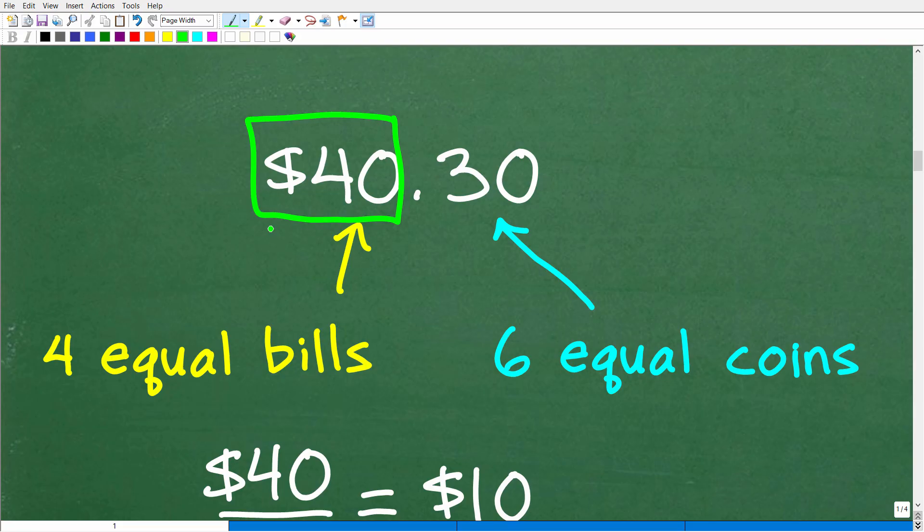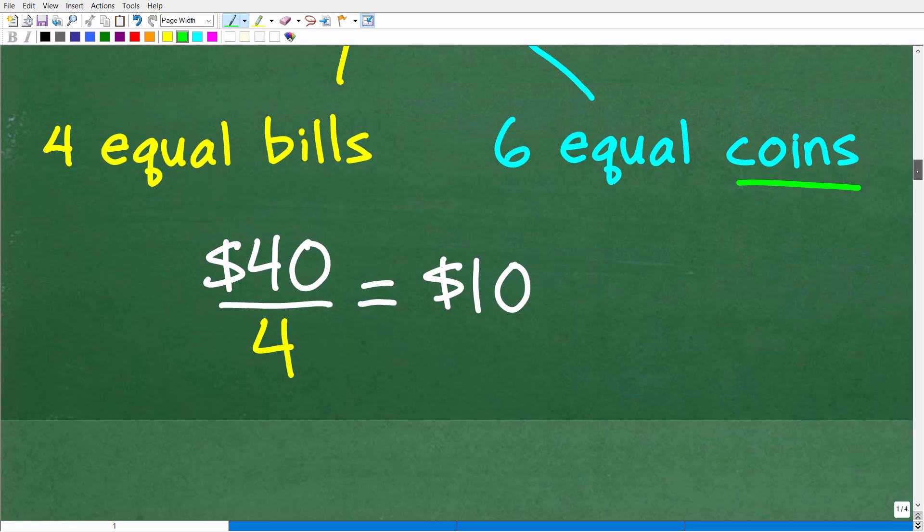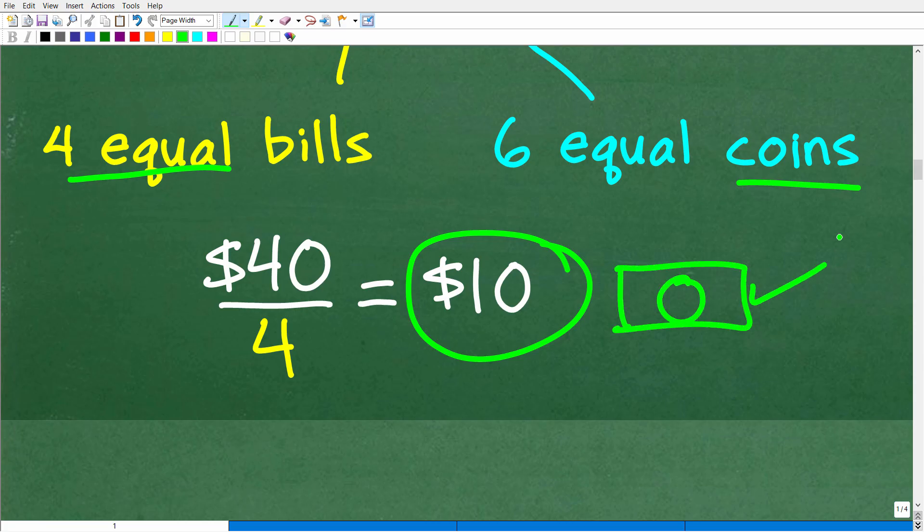This $40 and 30 cents, the $40 is the part he will pay with the bills and the 30 cents, this right here, this is the change. So this would be the part he will pay with the coins. So let's take a look at the $40 part of this. If he paid with four equal bills, how do we figure this out? Pretty straightforward. Just take the $40 divided by four. And of course we end up with 10. So he paid with $10 bills.